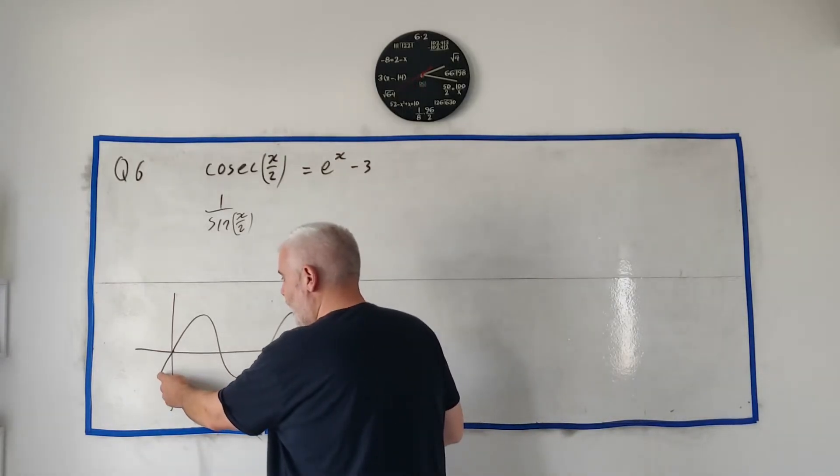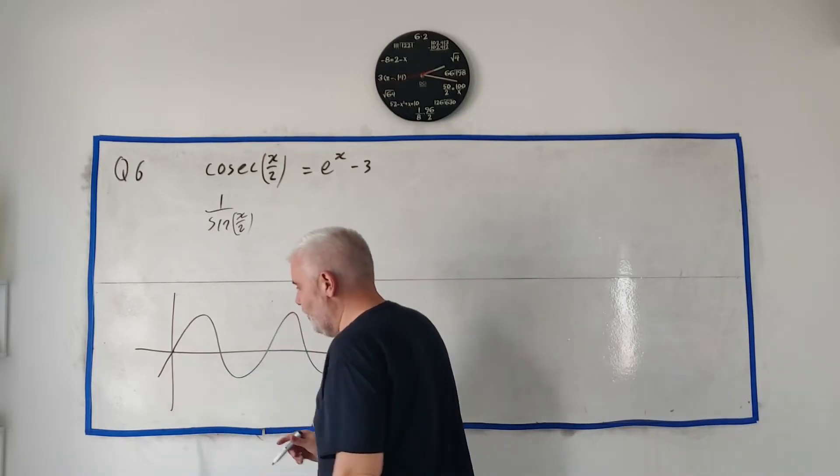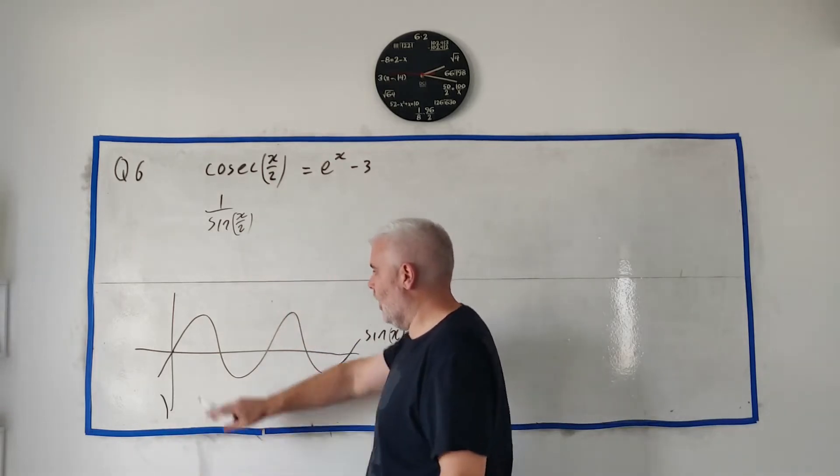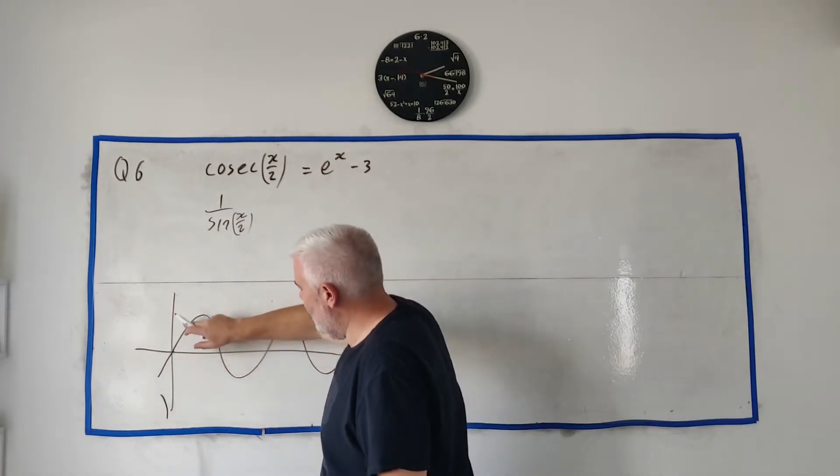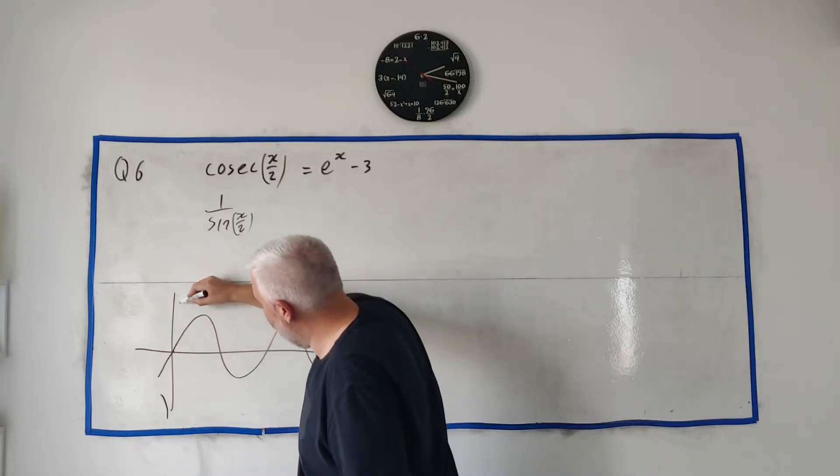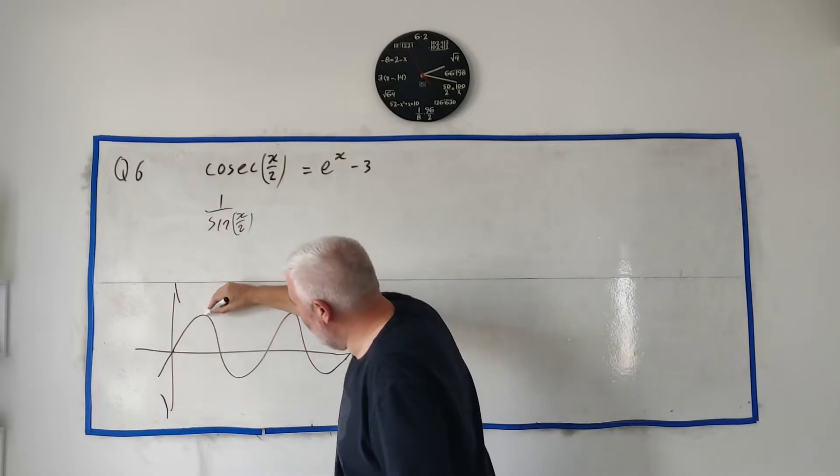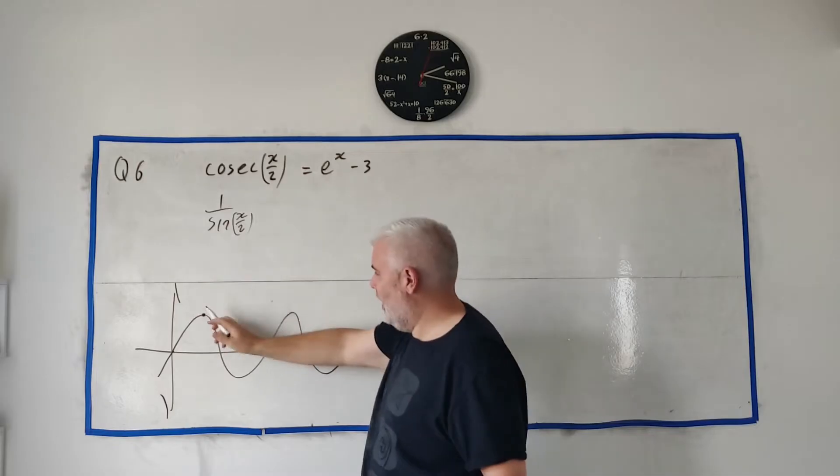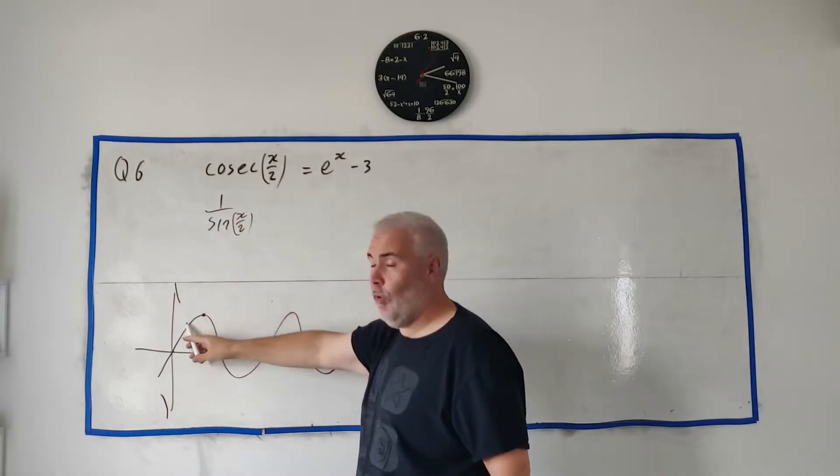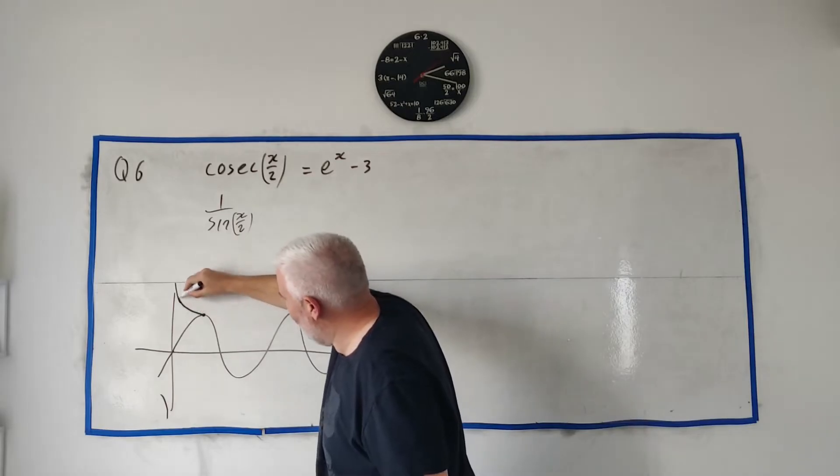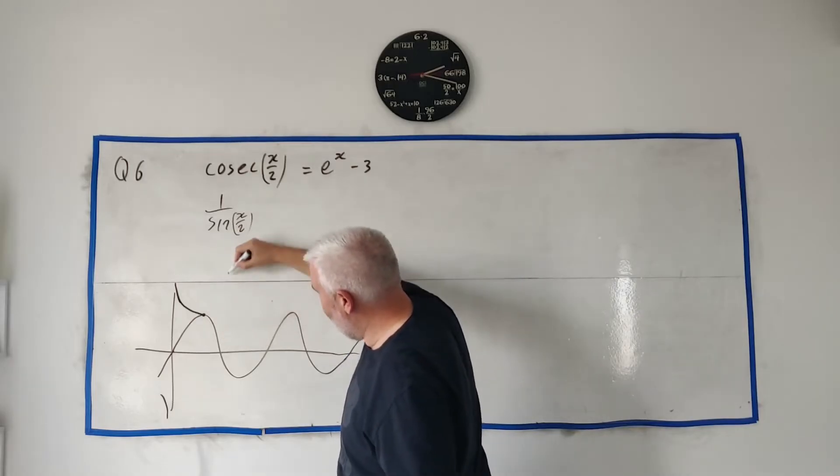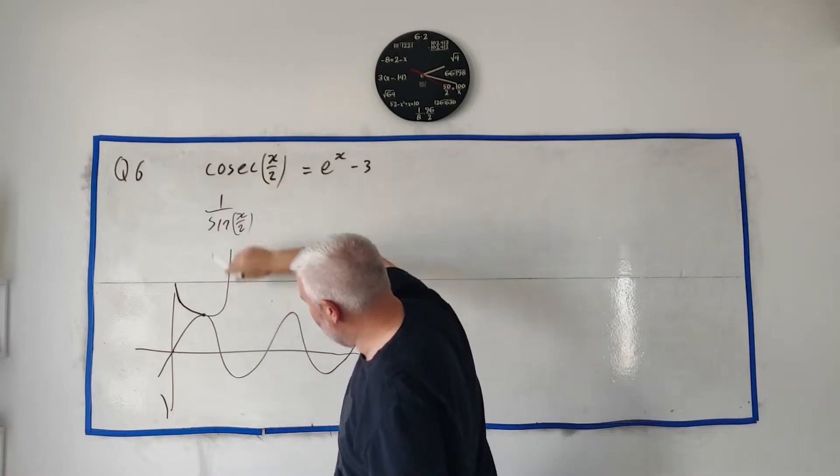On this side up here, it would approach, as we go right to left, it would approach infinity, positive infinity. Looks something like this. This point here is 1. So 1 divided by 1 is still 1. So they'll agree here. As it gets smaller, 1 divided by a smaller number will actually go up. So we'll get something that goes up like that. And as I said, it approaches infinity. Same happens here. As it gets near zero, it'll approach infinity.